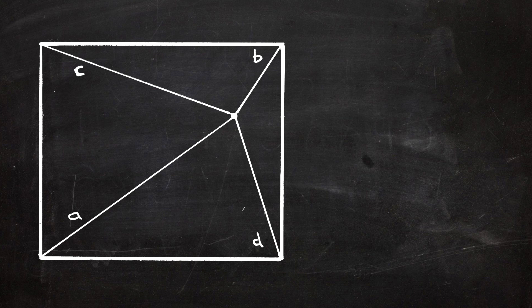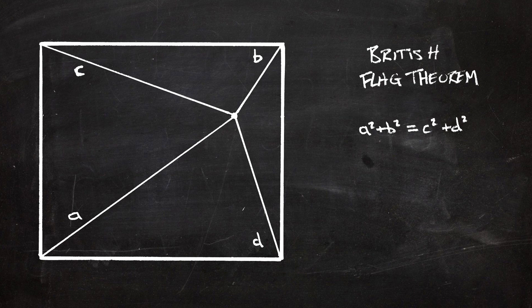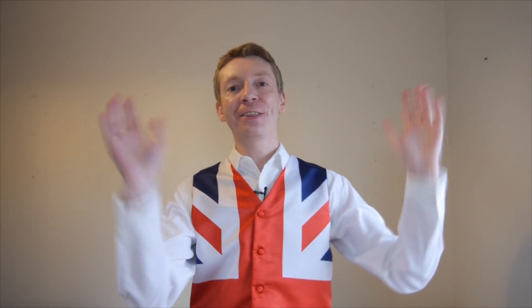Then the British flag theorem says that A squared plus B squared equals C squared plus D squared. It's a kind of Pythagoras thing. You can use it to find distances.